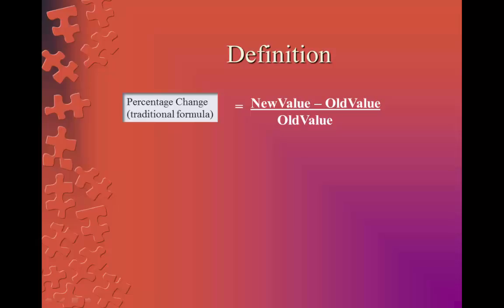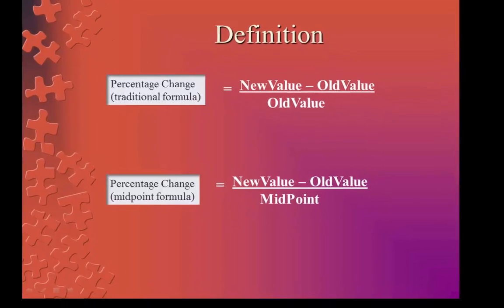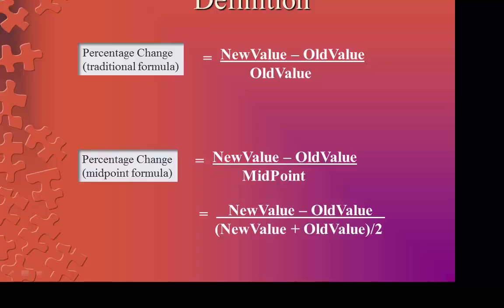Here's a compromise called the midpoint formula. The absolute change is divided by the midpoint between the old value and the new value. Usually it is easy to find the midpoint between the two values, but when the numbers are odd, it makes sense to calculate it. We find the midpoint as the average between the two values — we add up the old and the new value and then divide by two.